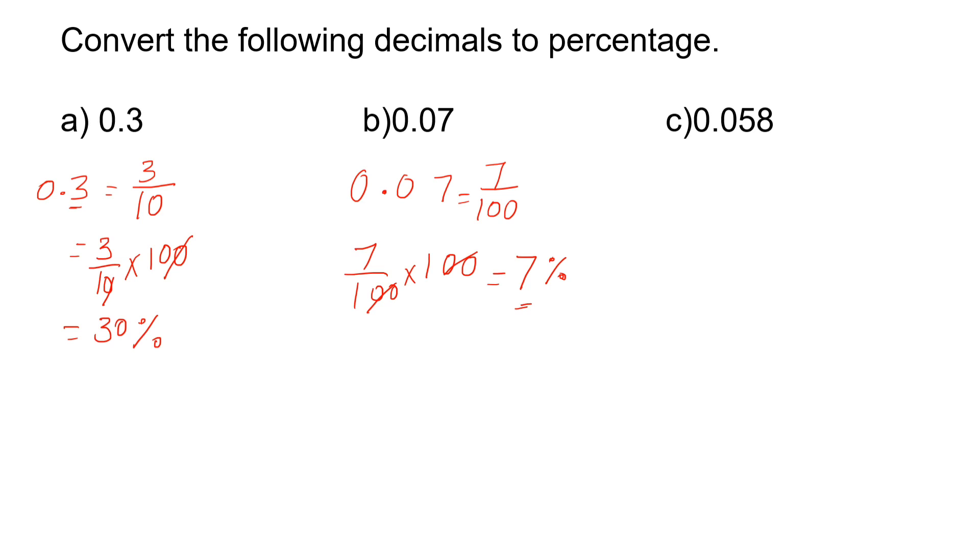Similarly 0.058. First convert, first change into fractional form. 0.058. The 0 place value is 10s, 5 place value is 100s, and 8 place value is 1000s. So here 0.058 is nothing but 58 out of 1000.